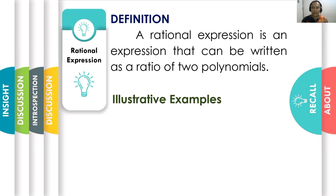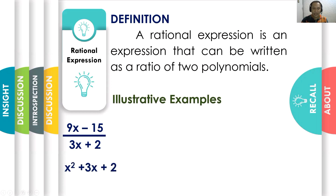9x minus 15 is a polynomial, all over 3x plus 2, which is also a polynomial. Therefore, 9x minus 15 all over 3x plus 2 is a rational expression. Next, x squared plus 3x plus 2 is a polynomial, and 3 is also a polynomial. Therefore, x squared plus 3x plus 2 all over 3 is a rational expression.